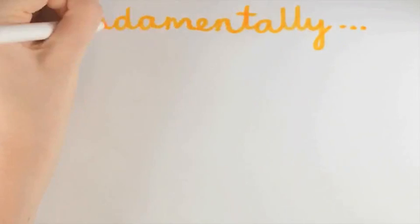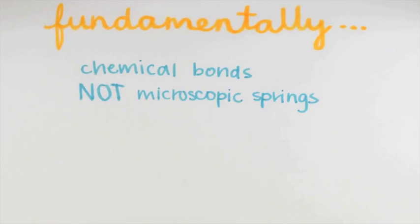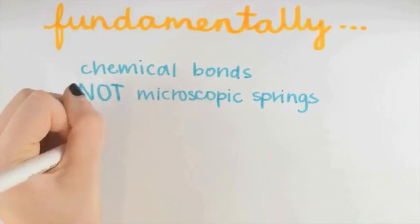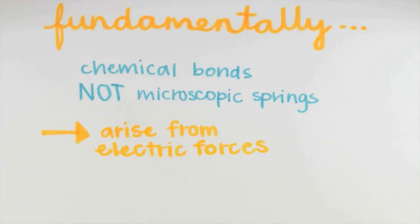Now, fundamentally, these chemical bonds aren't really microscopic springs. The bonds arise fundamentally from electric forces. This picture of the bonds as springs is a model, which we're using just as a helpful way to think about certain aspects of the way solids behave.